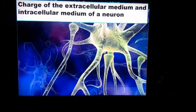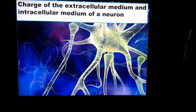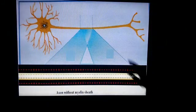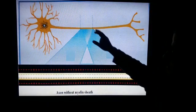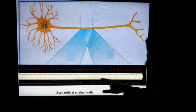In this video we talk about the charge of the exterior medium and the interior medium of a neuron. What do we have as a charge outside and what do we have as a charge inside? We will take a part of the axon and make an enlargement.